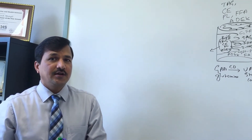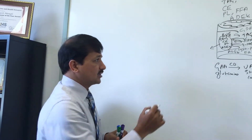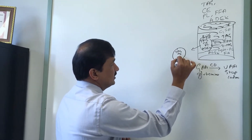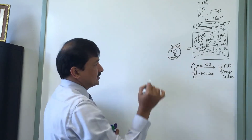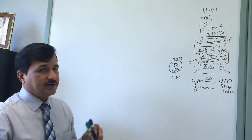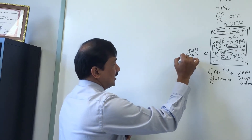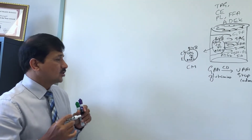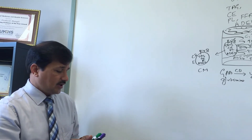This particle is called a chylomicron. Because it is a large molecule, it cannot be secreted directly into blood vessels — it is first secreted into the lymphatics and then enters the bloodstream. Once in the bloodstream, the chylomicron (which has ApoB48) acquires ApoC2 and ApoE from HDL, becoming a mature chylomicron.